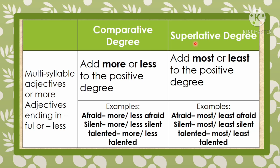To form the superlative degree of multi-syllable adjectives, add 'most' or 'least' before the positive degree. Examples: 'afraid' becomes 'most afraid' or 'least afraid.' 'Silent' becomes 'most silent' or 'least silent.' 'Talented' becomes 'most talented' or 'least talented.'